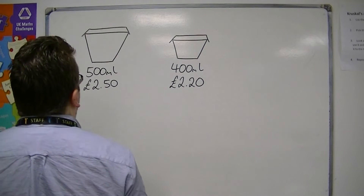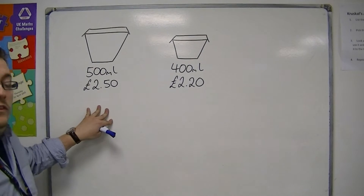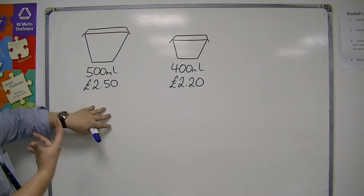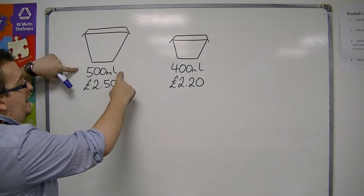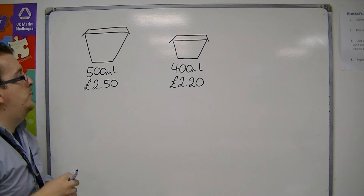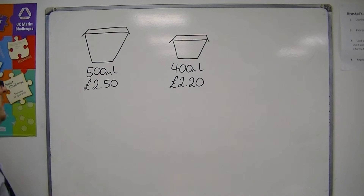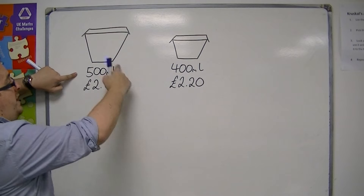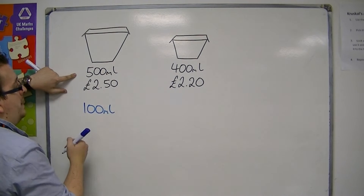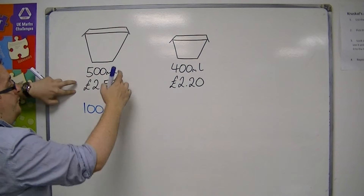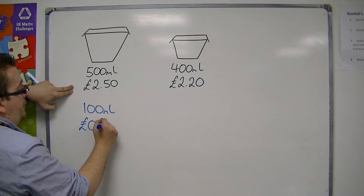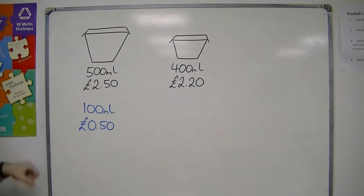So how are we going to compare these? You could compare them in two different ways — millilitres to pounds or pounds to millilitres. One potential way is to look at how much you're going to pay for 100ml. For the 500ml cup, 100ml would be found by dividing by 5, so we divide the price by 5. That means we'd be paying 50p for every 100ml.